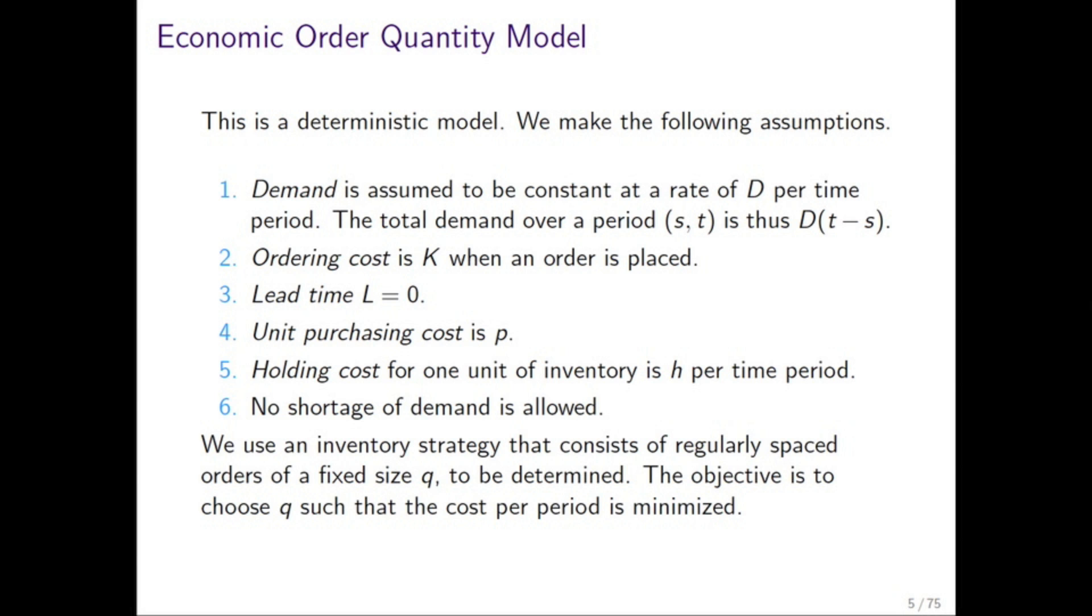There are various assumptions. Firstly, we assume that demand is constant at a rate D. We assume there's an ordering cost, so for every single order there's a bulk cost of K. There's no lead time, so as soon as we order our stock, it's there. We also assume there's a unit purchasing cost of P, so P for every single unit of stock we have. And then we assume we have a holding cost, so the fact of sitting on a lot of stock costs us. And we don't allow shortage of demand.